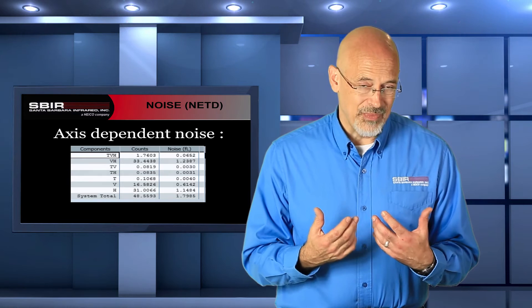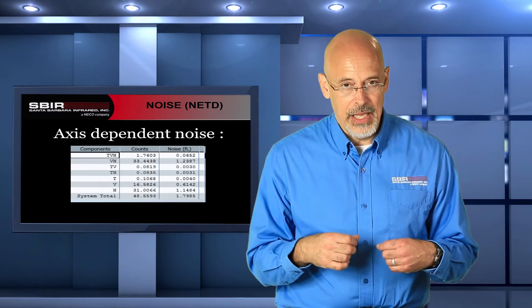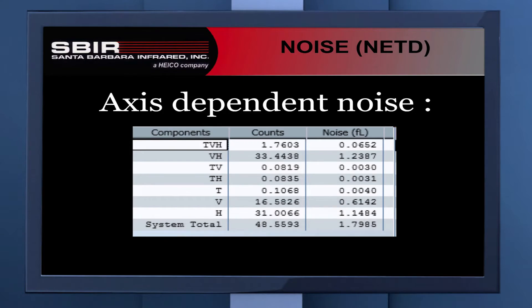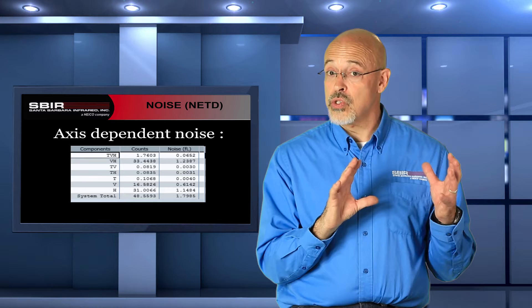The third way we can look at noise is axial dependency. That means that I can look at the noise that's just in the horizontal, or vertical, or just over time, and I can start breaking the noise down in those three important axes. By looking at all these different axial dependent noise components, we can sometimes determine sources of noise that allow us to take various corrective actions.